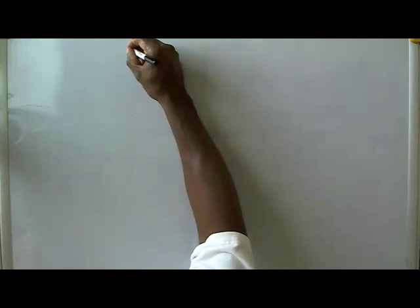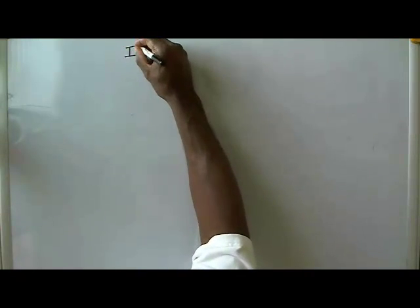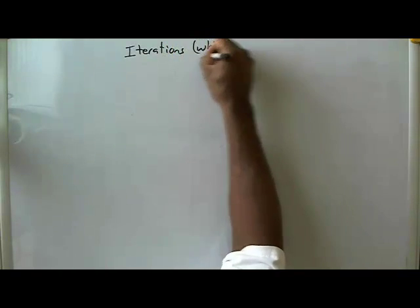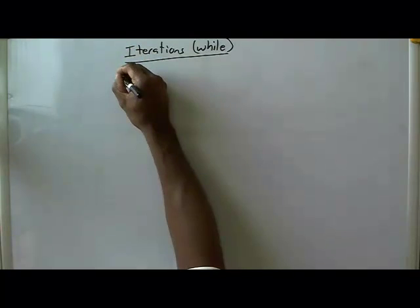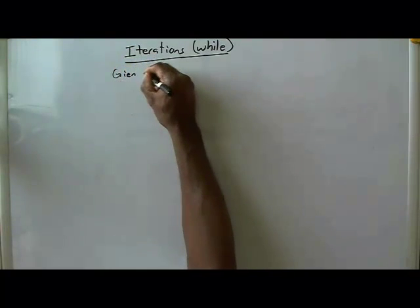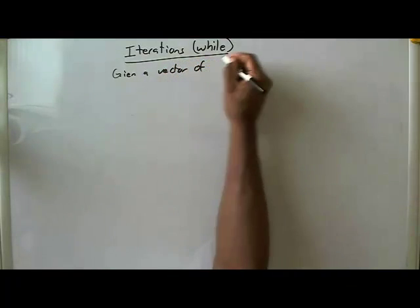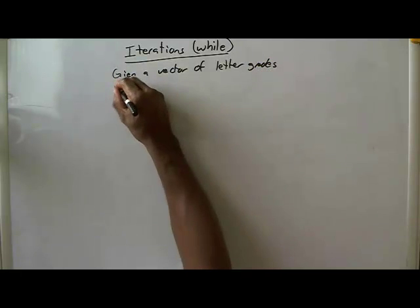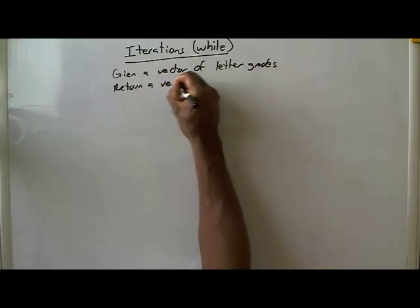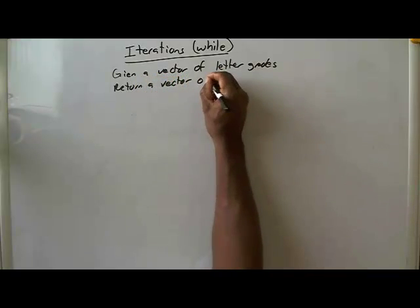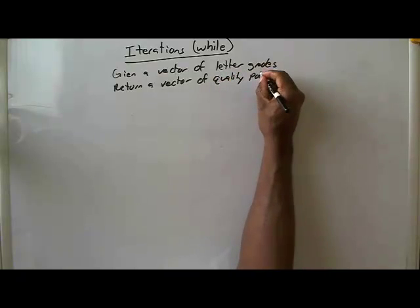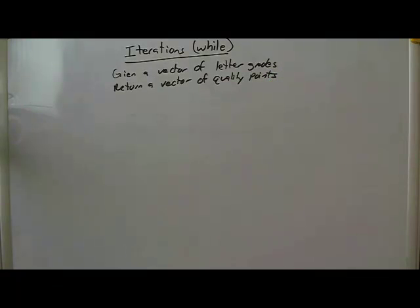This is the third of four examples of implementing iterations with the while loop. This is the example where we are given a vector of letter grades and we have to return a vector of quality points that are representative of the letter grades in the given vector.